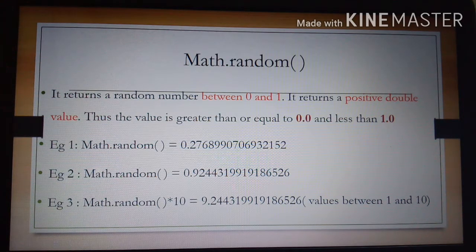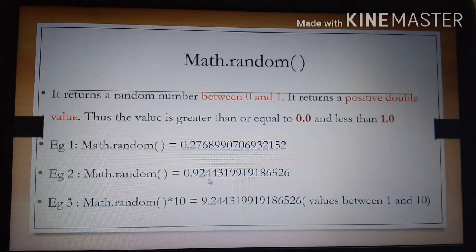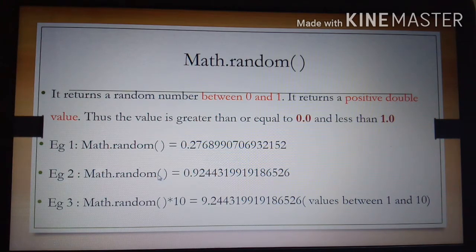Let us see the examples. Math.random() could return 0.27689 and so on. The next time you execute the same Math.random(), it could return 0.92441 and so on. Similarly, whenever we execute the random function, we will get a value between 0.0 and 1.0.